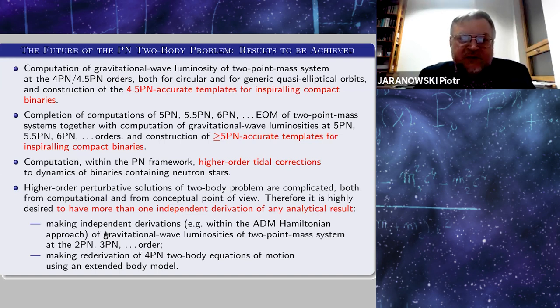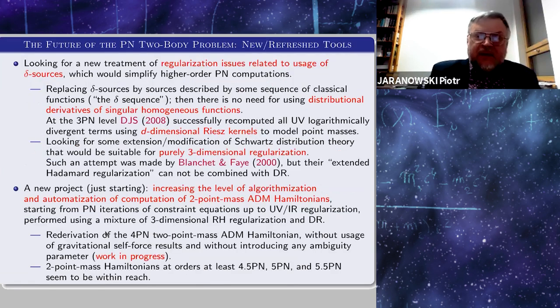Still, it is very important to compute within the post-Newtonian framework higher-order tidal corrections needed to describe accurate dynamics of binaries containing neutron stars. And the last remark is as follows: There are still some very complicated analytical results achieved within the post-Newtonian approach which were computed only once. I mean here, first of all, gravitational wave luminosities computed for two-point mass systems by group of Luc. It would be very desirable to have at least one more independent derivation of these results. Also, I think that it would be interesting to have the derivation of 4PN two-body equations of motion using an extended body model to explicitly show validity of the effacement principle at this order.